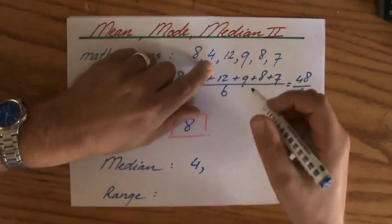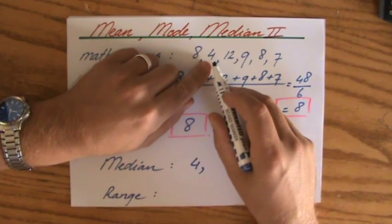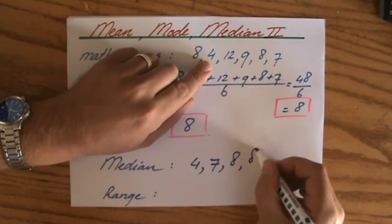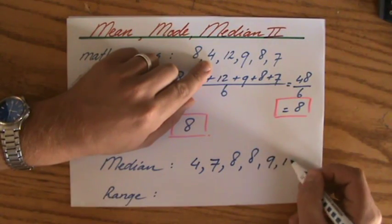A 4, put it in an ascending order, followed by a 7. Then we have an 8, we have another 8, a 9, and a 12.